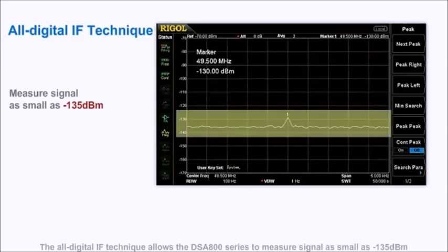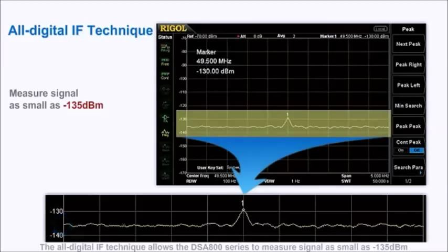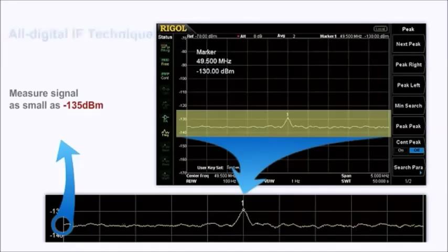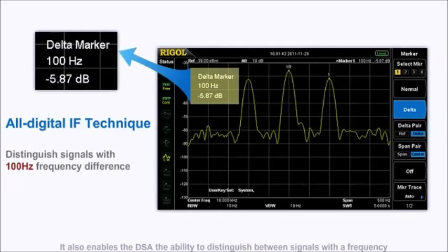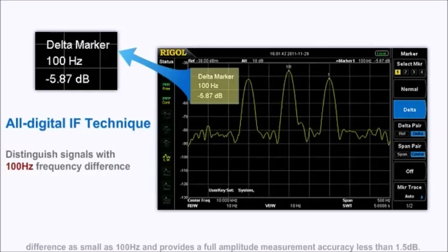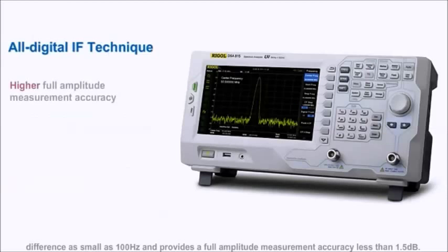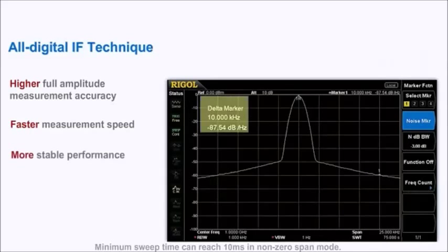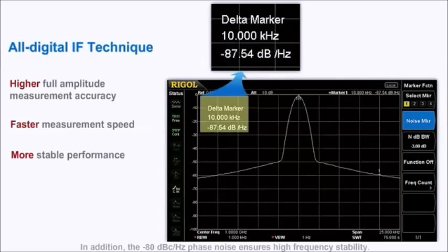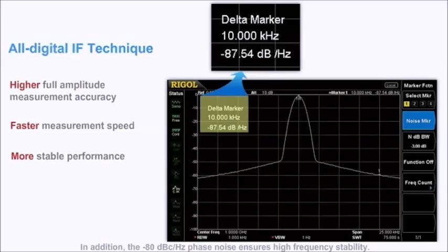The all-digital IF technique allows the DSA800 series to measure signals as small as -135 dBm. It also enables the DSA the ability to distinguish between signals with a frequency difference as small as 100 Hz and provides a full amplitude measurement accuracy of less than 1.5 dB. Minimum sweep time can reach 10 ms in non-zero span mode. In addition, the -80 dBc per hertz phase noise ensures high frequency stability.